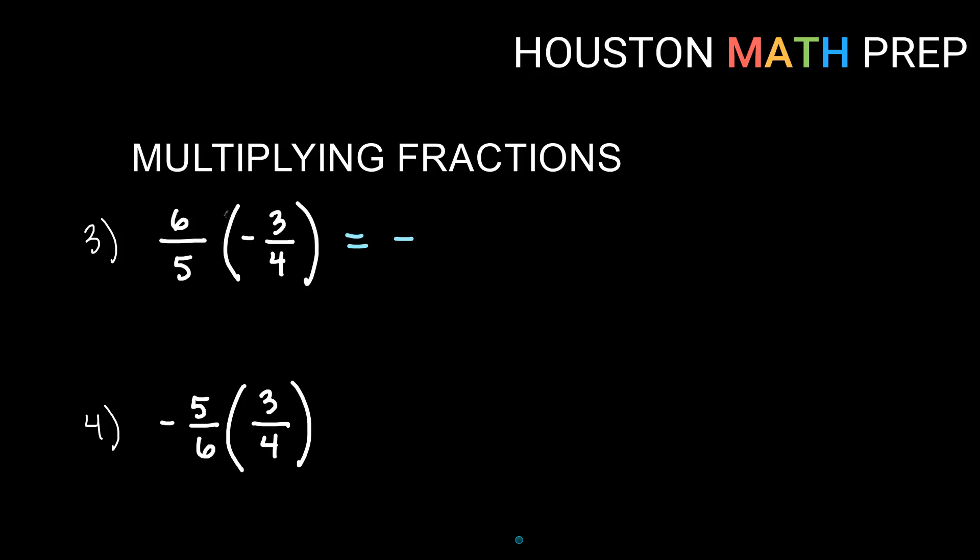I can go straight across, or I can reduce if I see anything. Here, I see that 6 is on top and 4 is on bottom, and they share a common factor. 3 and 5 do not. But these are both divisible by 2. So if I divide 6 by 2, I can get 3. And if I divide 4 by 2, I get 2. So you have to reduce them by the same factor, right? Now going across, 3 times 3 on the top will give me 9. 5 times 2 on the bottom will give me 10. And it's already reduced for us. So that is good.